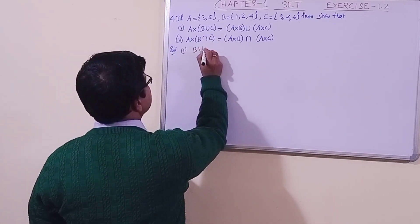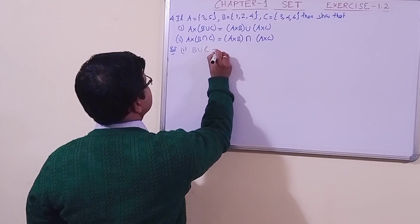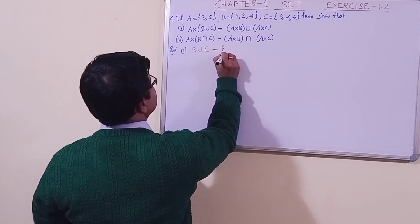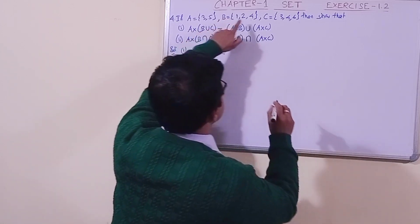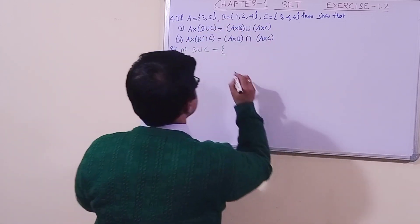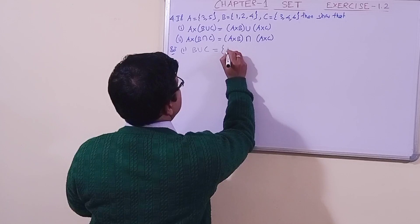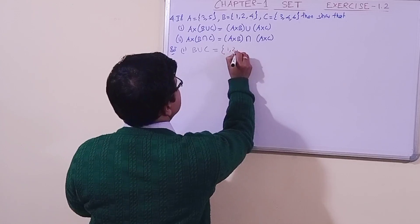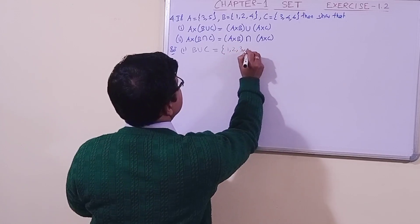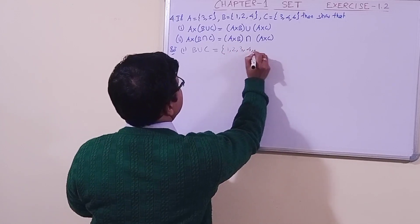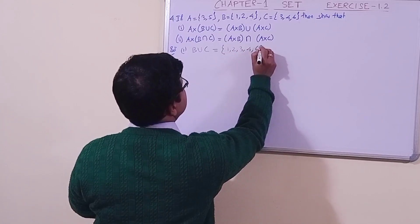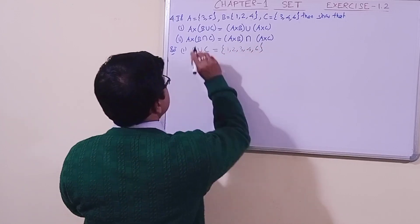Let us find B union C. B union C means B or C, so it is {1, 2, 3, 4, 6}. B union C is done.